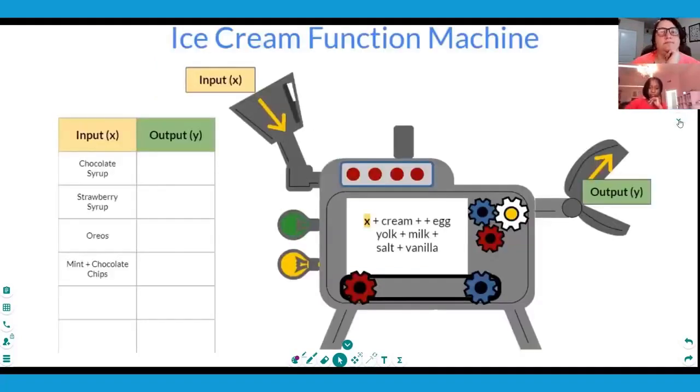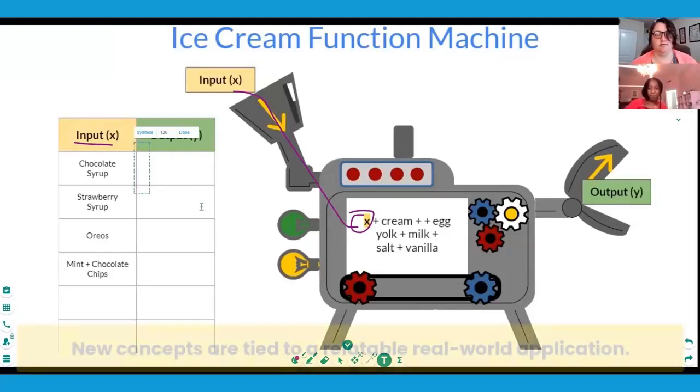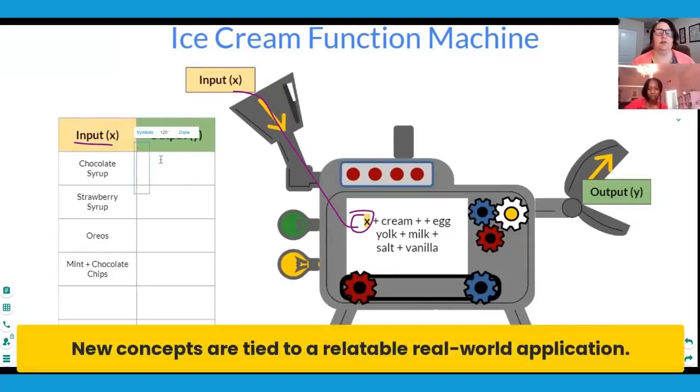For example, we have a function machine here. If I put in x, my variable, add cream, egg yolk, milk, salt, and vanilla, I'm going to get something out. This one makes ice cream. If I put in chocolate syrup for my x—that's my input—I mix it in with cream, egg yolk, milk, salt, and vanilla. What am I going to get out of it? Chocolate ice cream. Very good, don't overthink it.